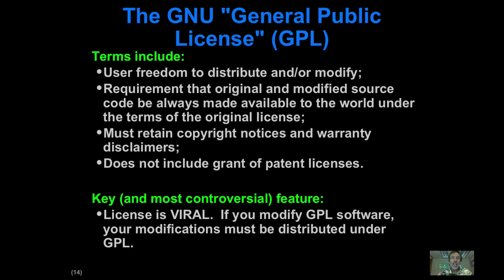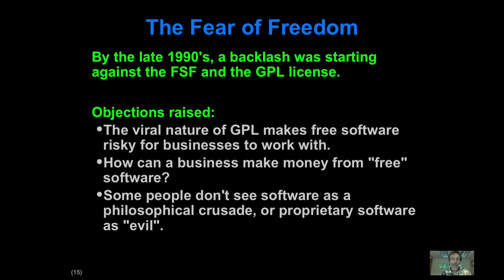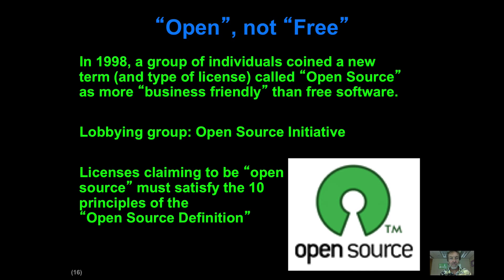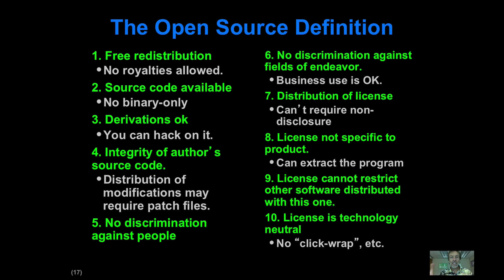So what we have now is the GNU license — the GPL — and people who want less restrictive licenses. They'd like licenses that allow people to take open software that's publicly available and potentially take it private, or do things not provided by the GPL. Some people just didn't agree with this philosophical crusade of Richard Stallman, so they came up with the idea of calling it open source software instead of free software. They defined 10 principles that licenses must satisfy in order to be called open source — and it doesn't require the viral copyleft aspect of the GPL, although the GPL does satisfy all those definitions.